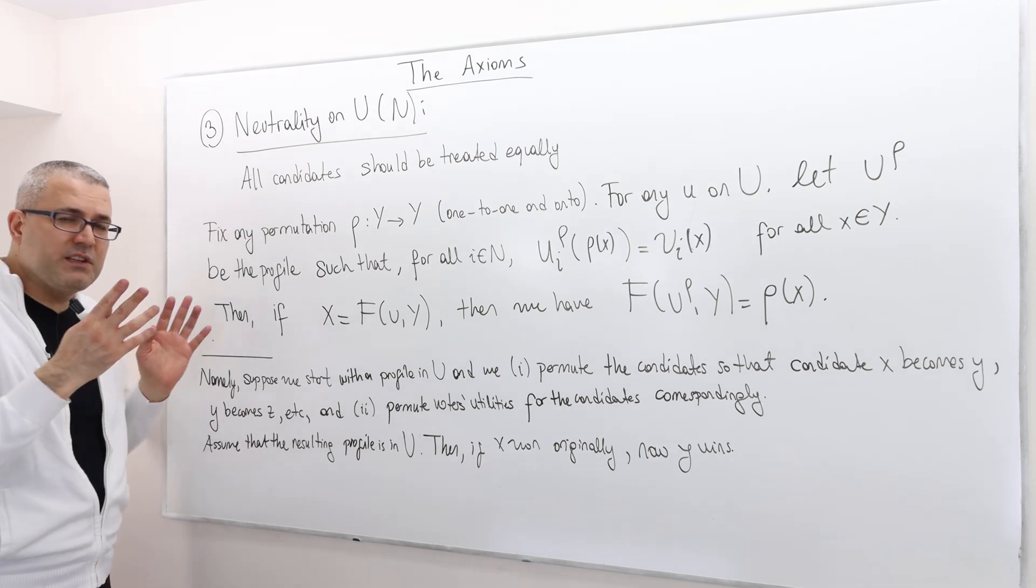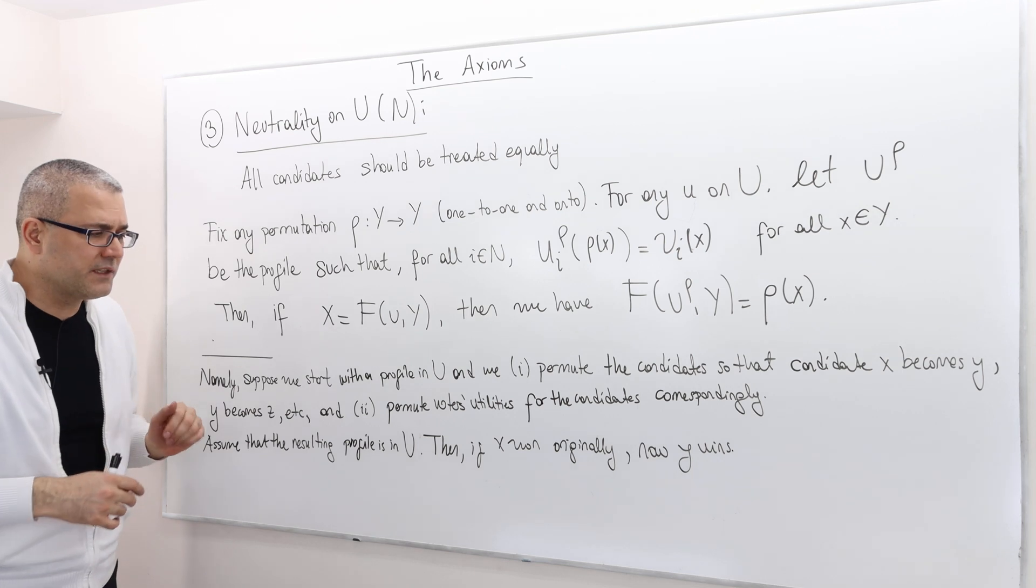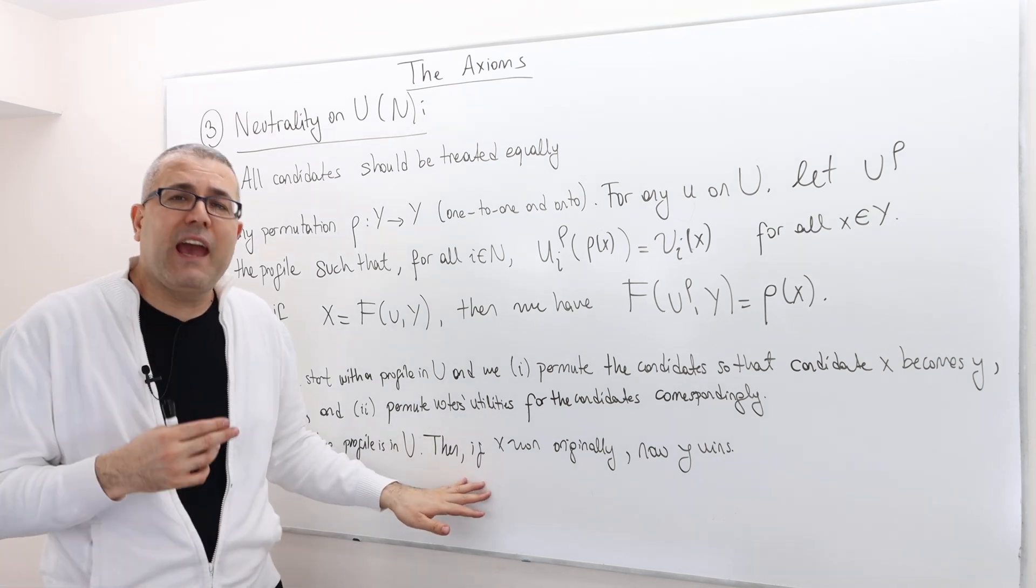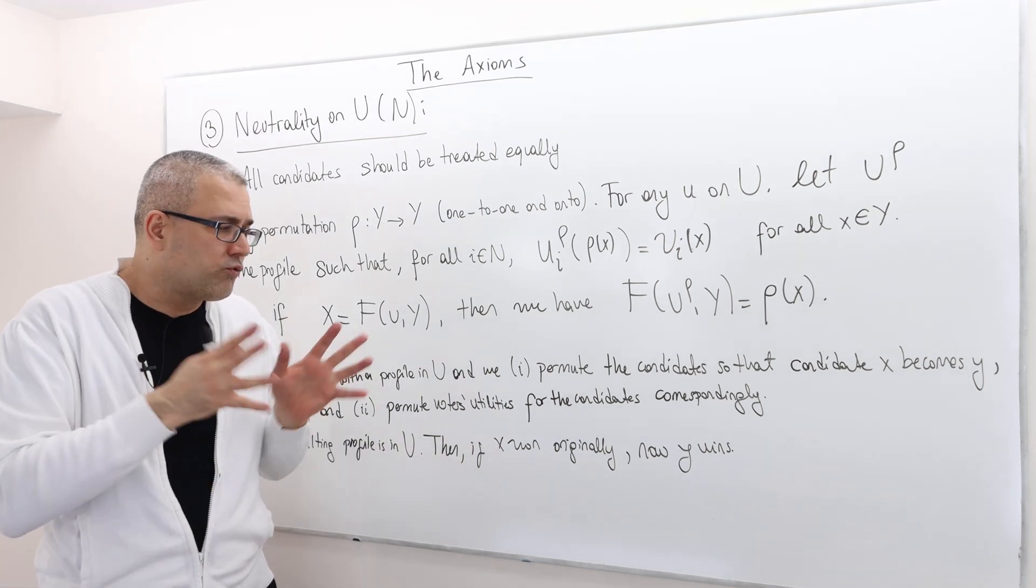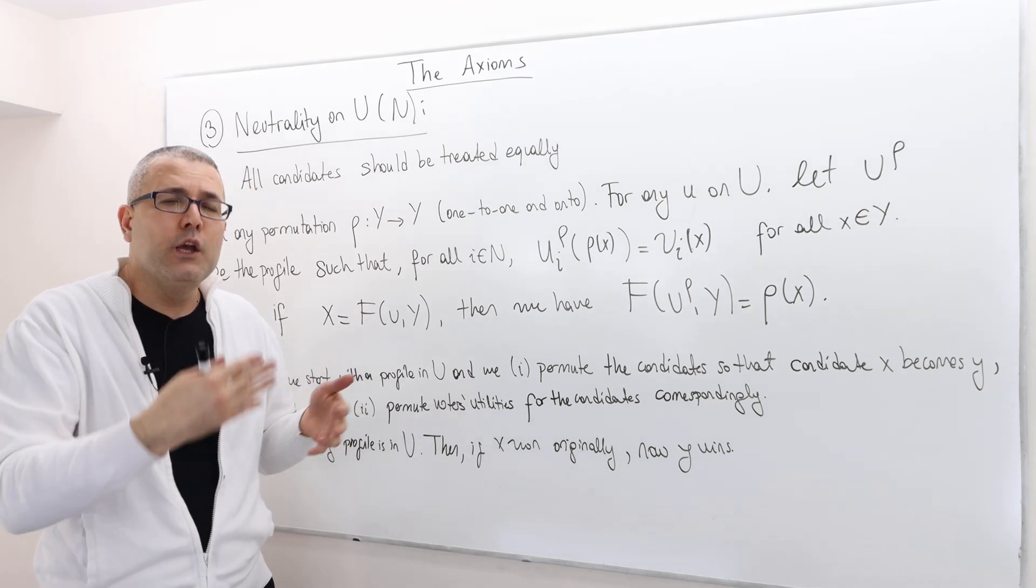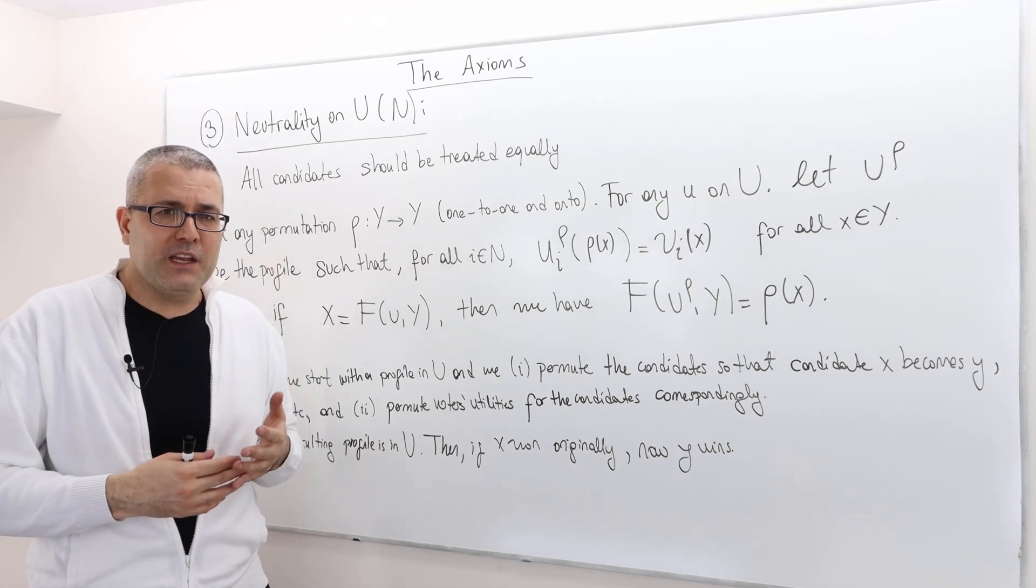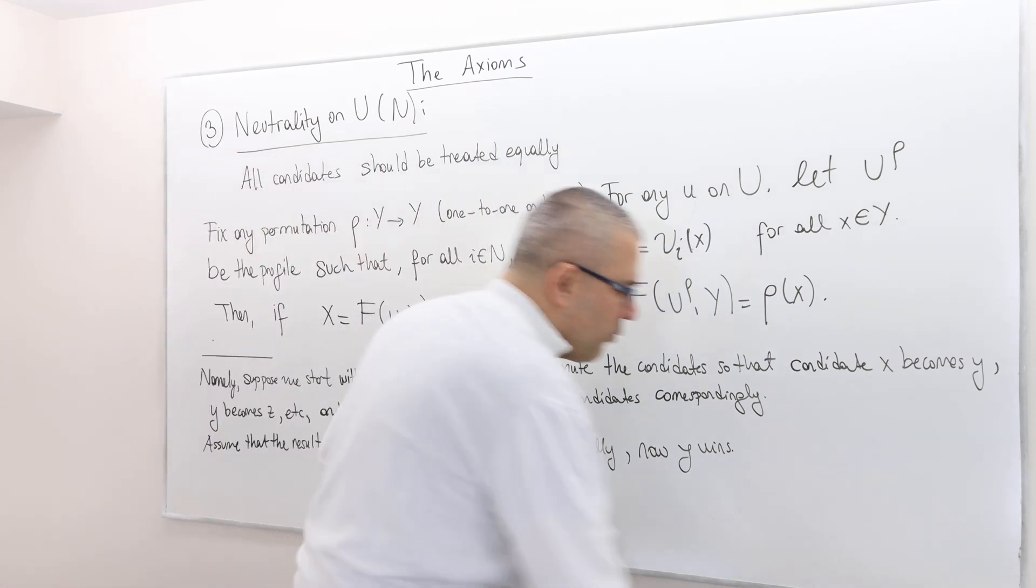Assuming that this resulting profile is also in our restricted domain of preferences, then if x was winning originally, now the permuted version of x, which is now called y, should be the winner under this permutation. So, once again,